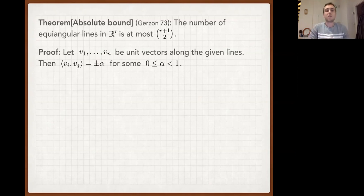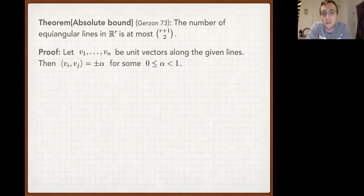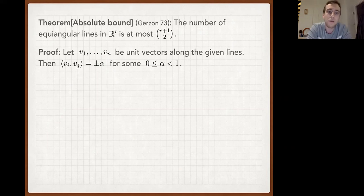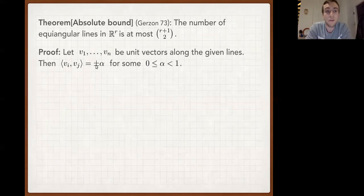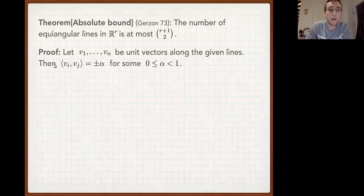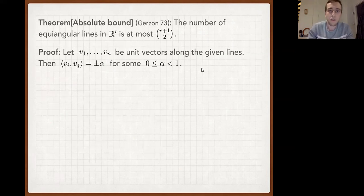The way we always think about this problem: choose one unit vector per line. For each line you have two choices — a vector or its negation. Because lines have the same angle, the inner product (cosine of that angle) is the same up to sign. So if we have equiangular lines and choose unit vectors along them, the inner products are ±α for some common value α, which I sometimes call the angle.